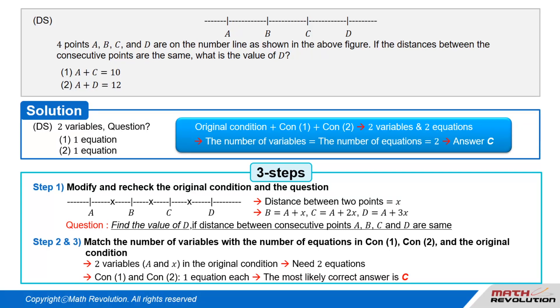From the original condition we have two variables, A and x. To match the number of variables with the number of equations, we need two equations, since conditions 1 and 2 will provide one equation each. C would most likely be the answer.